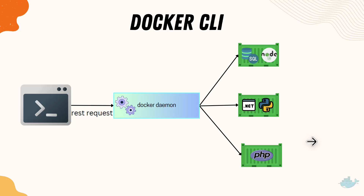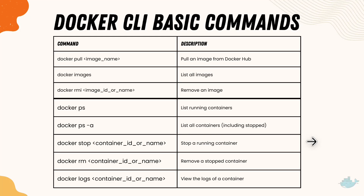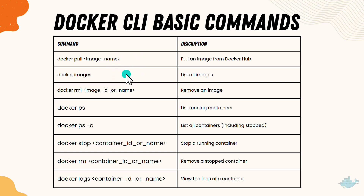Docker has many different commands, but let me show you some of the basic ones. For instance, if you want to pull an image — like how we did from Docker Desktop for an nginx image — you can use the command `docker pull` followed by the image name. To see images already downloaded on your system, you can use the `docker images` command.